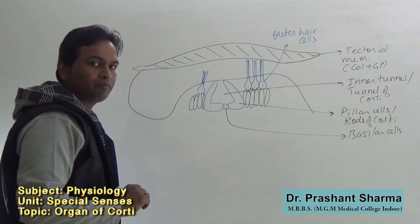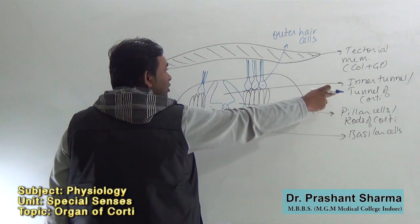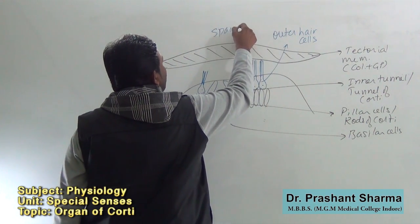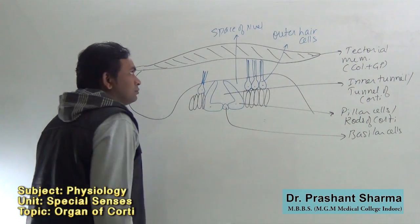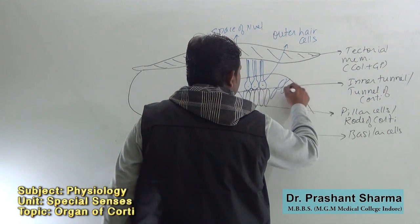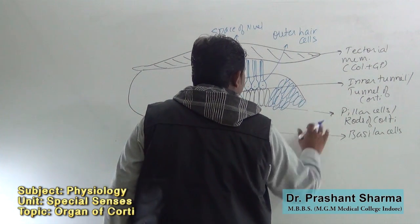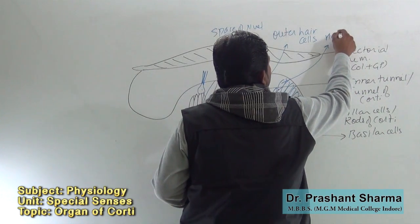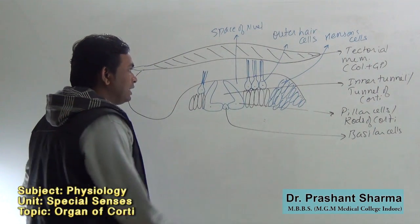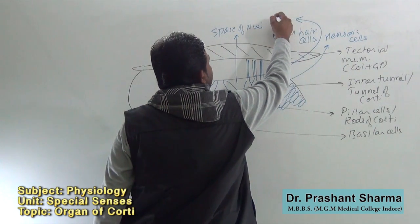The cavity present between the tunnel of the pillar cells and the outer hair cells is known as the space of Nuel, or the Nuel tunnel. Hansen cells are outer to the outer phalangeal cells, and the cavity between the Hansen cells and the outer hair cells is known as the outer tunnel.